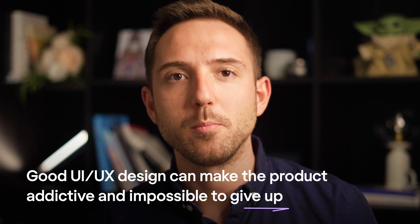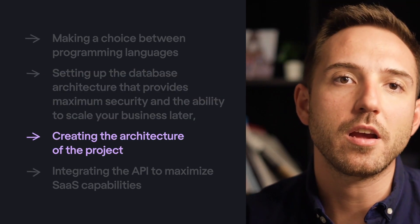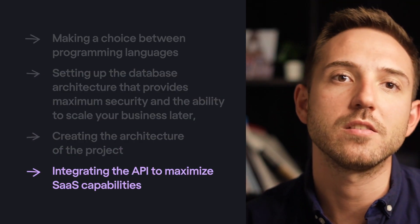When you get your first feedback, it's time to design an MVP. Design is probably one of the most important aspects that contributes to SaaS success — good UI/UX design can make the product addictive and impossible to give up. The experience customers get when interacting with your service influences conversion and retention rates. Starting with the MVP is a smart move that helps you save time and money, avoiding jumping straight into costly development and launching. You can present it to investors as well as your first real users to check whether they like the product and are willing to pay for it. If everything goes well, you can move to the actual building of the software, which includes defining the tech stack, setting up database architecture for security and scalability, creating project architecture, and integrating APIs to maximize your SaaS capabilities.